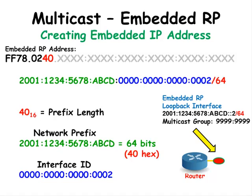The next two digits are the prefix length. Since 64 bits is the normal standard, I will use that. But since we're using hexadecimal digits, 64 will translate into 40 hexadecimal. So we will put that inside of our embedded IP address.